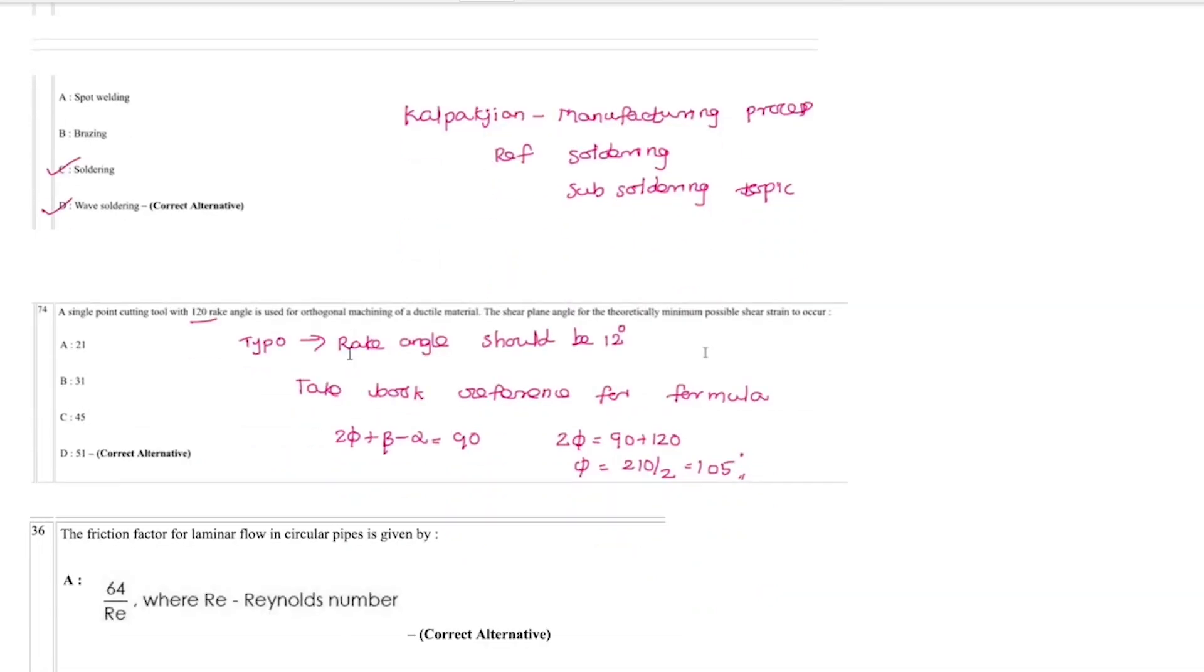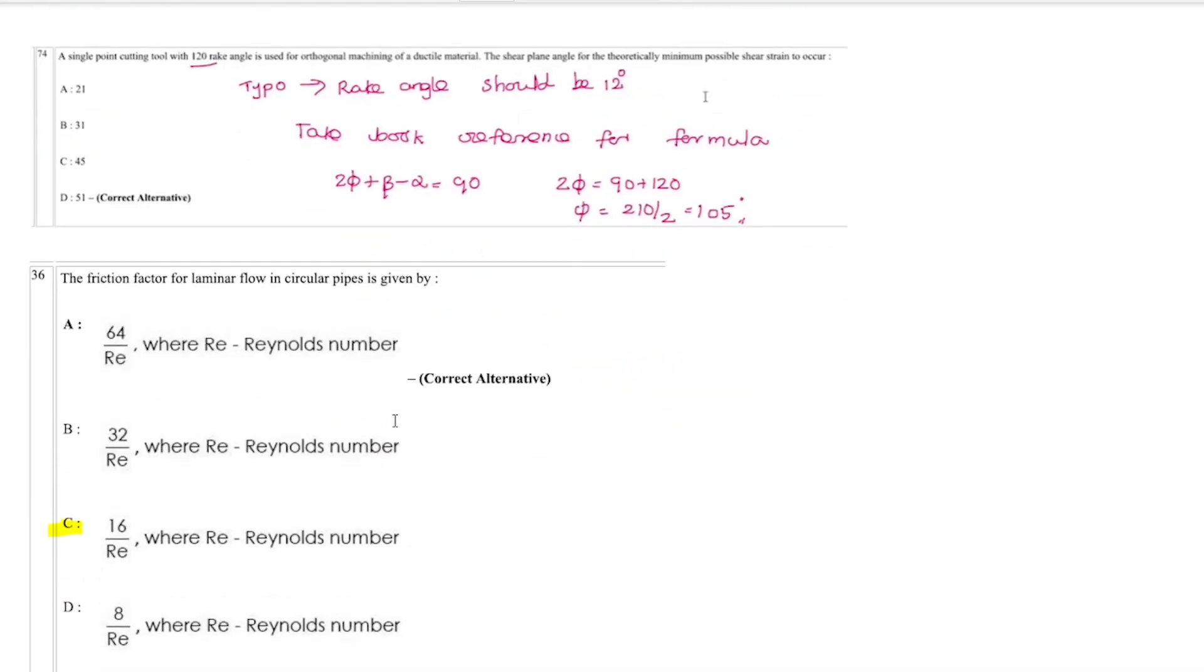The next question is about PH type. For the next question, we ask the friction factor. So friction factor 16 by Re is correct, but friction coefficient is different. The answer C is changed.